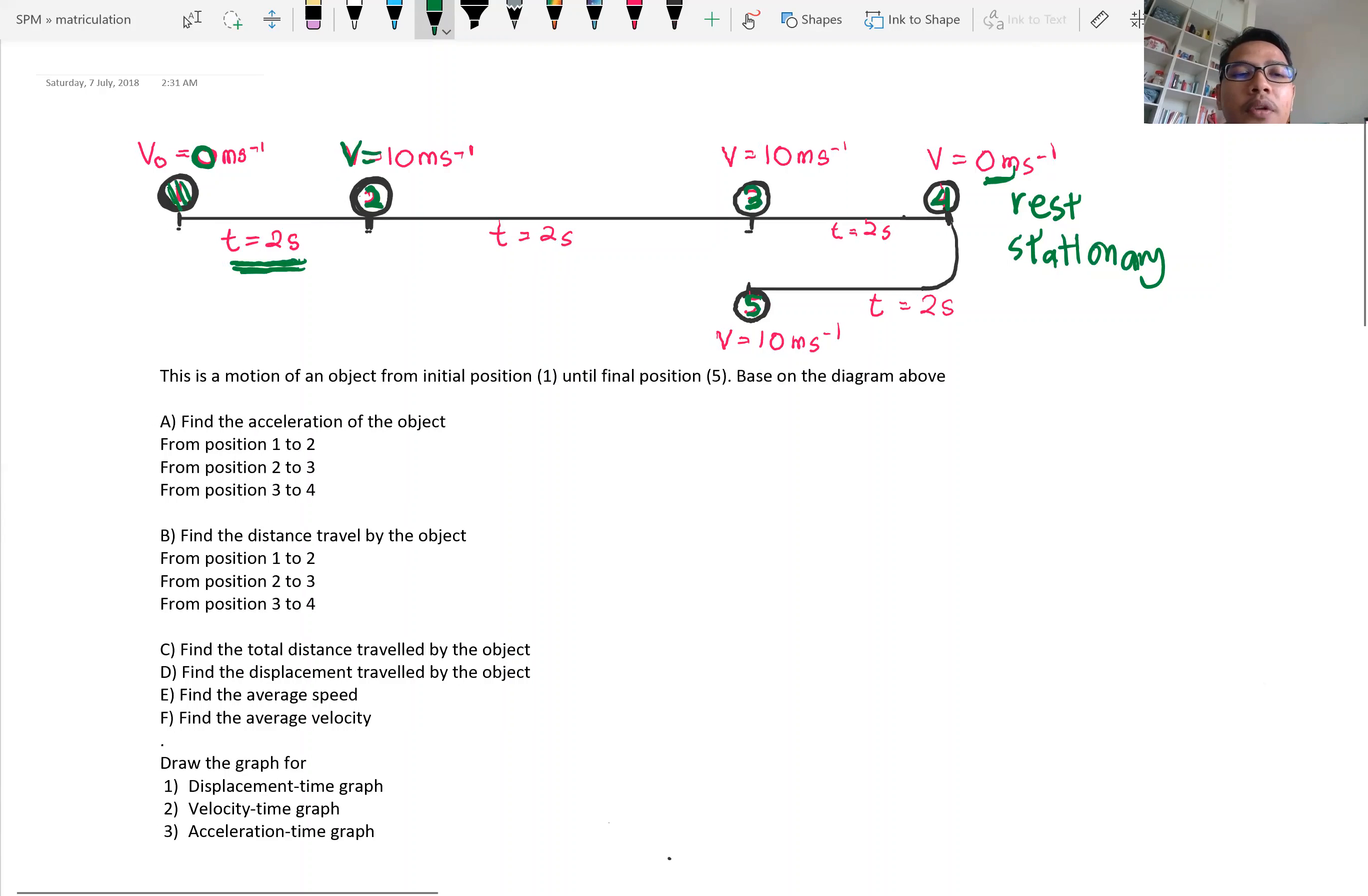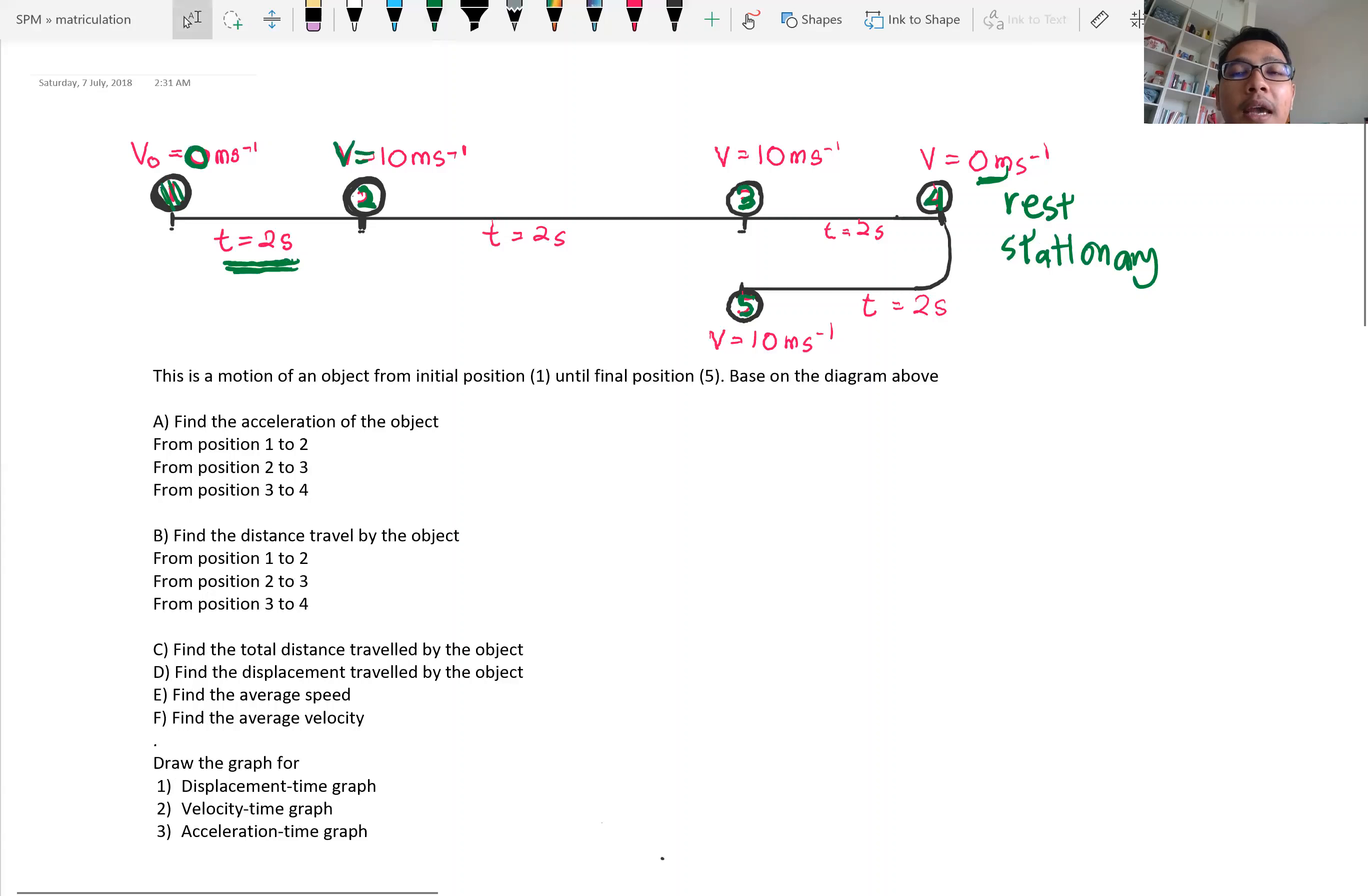So the first question here is to find the acceleration from each position. What is the acceleration from position 1 to 2, from 2 to 3, 3 to 4 and also 4 to 5. So from position 1 to 2, we start with position 1 to 2, so acceleration.